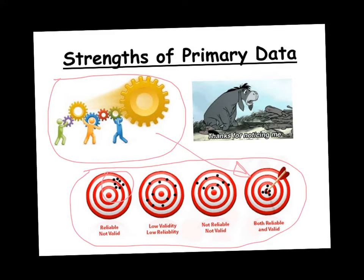Another strength of primary data is that the sociologist could research groups who have previously been ignored. For instance, a sociologist might look at the role of home workers amongst Bengali women, who might not be part of traditional sources of data such as official statistics.